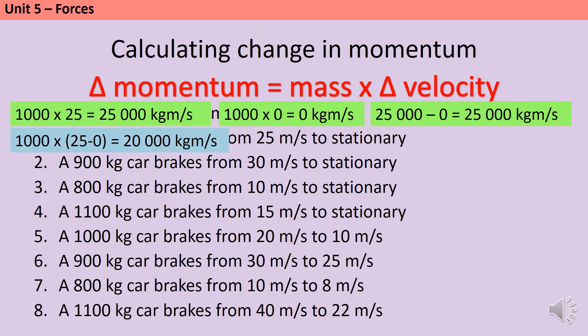Or, I can use the second method and do 1,000 multiplied by 25 take zero. I'm going to carry on with the second method just because it's a little bit faster. So, for question two, we've got a 900 kilogram car, and the difference in velocity is going to be 30, so that will be 27,000 kilogram meters per second.